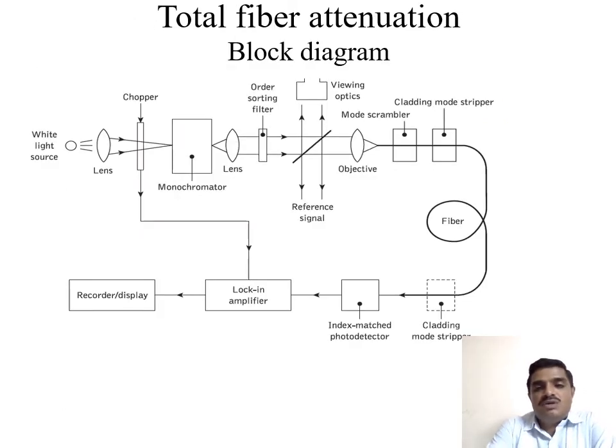This is our total fiber attenuation measurement block diagram. A white light source is used in this experiment. It may be manufactured by a xenon light source. That light source keeps emitting light signals of different wavelengths and brightness levels. In order to improve the brightness level or luminescent content, we have placed a lens between the chopper and white light source.